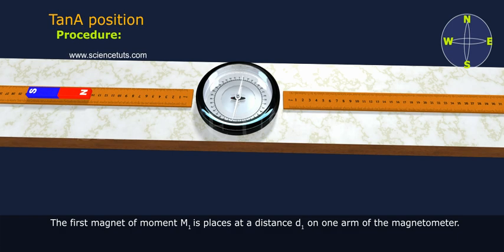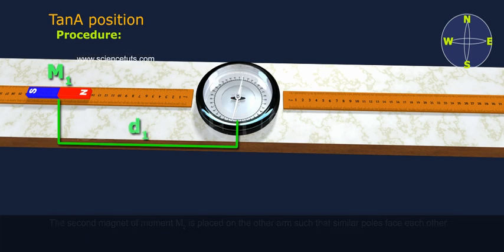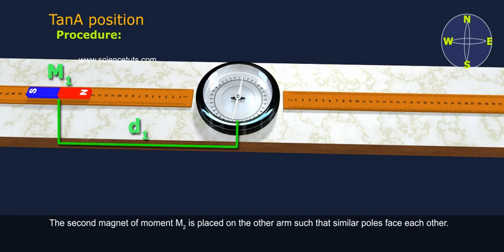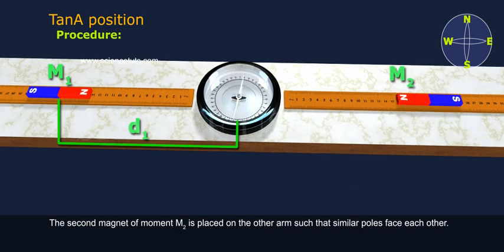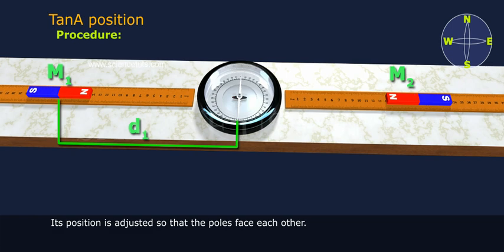The first magnet of moment M1 is placed at a distance D1 on one arm of the magnetometer. The second magnet of moment M2 is placed on the other arm such that similar poles face each other. Its position is adjusted so that the poles face each other.